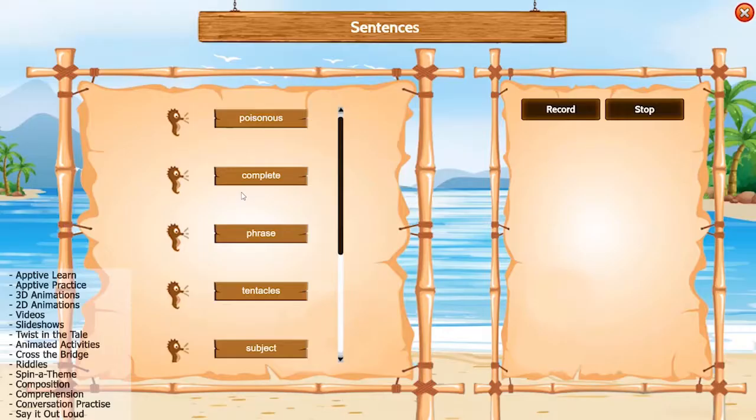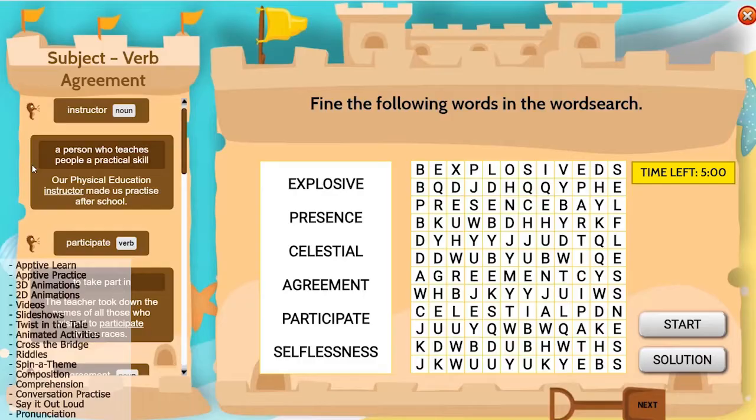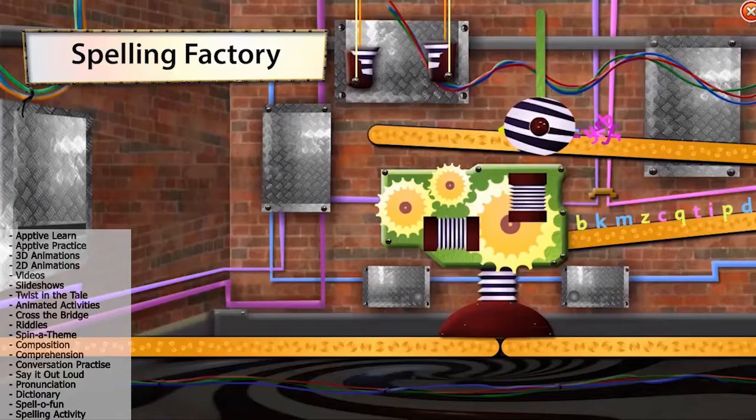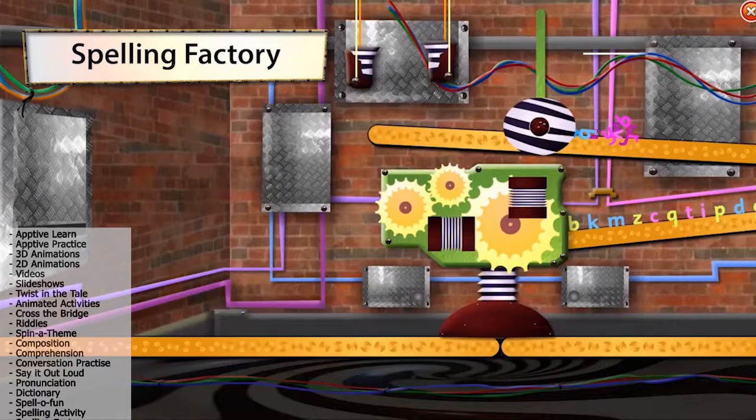Say It Out Loud and Pronunciation Help teach students the correct pronunciation of letters and words. Dictionary, Spellofun, Spelling Intuitivity, and Spelling Factory enrich the students' vocabulary and help them evaluate themselves.